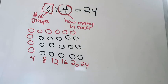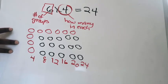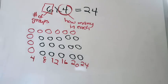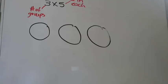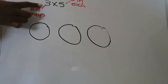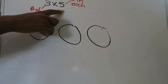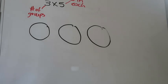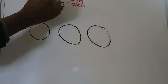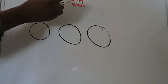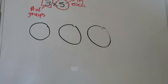The next example is going to be a little bit different, but it will still follow the same steps: making sure we know what our factors are, that our first factor represents the number of groups, that our second factor represents how many are in each group, and then we use our diagram to figure out our product. In this example, my first factor is 3, so I'll be dealing with 3 equal groups. My second factor is 5, which tells me I'll have 5 counters in each group. I'll box the 3 and circle the 5.